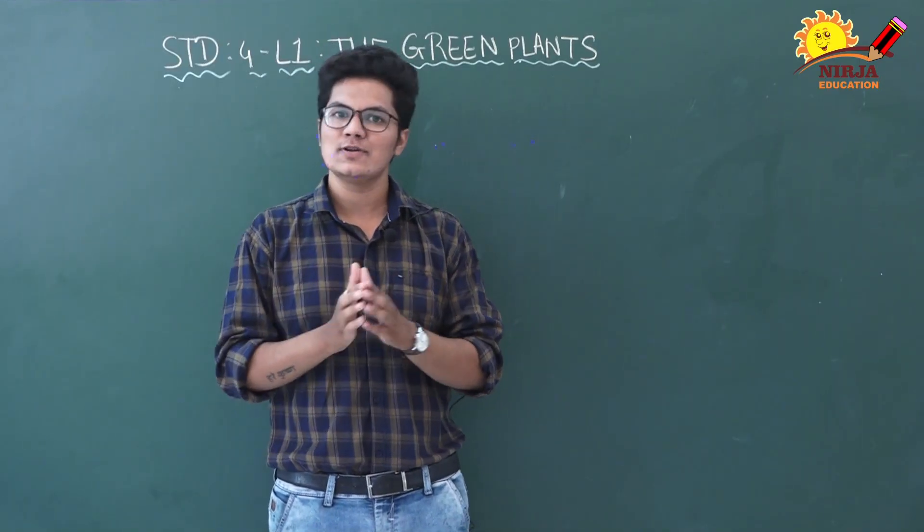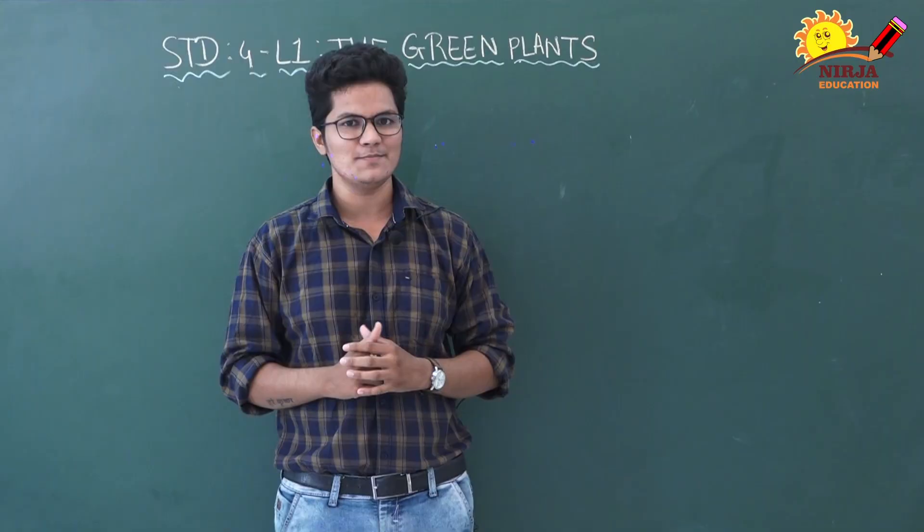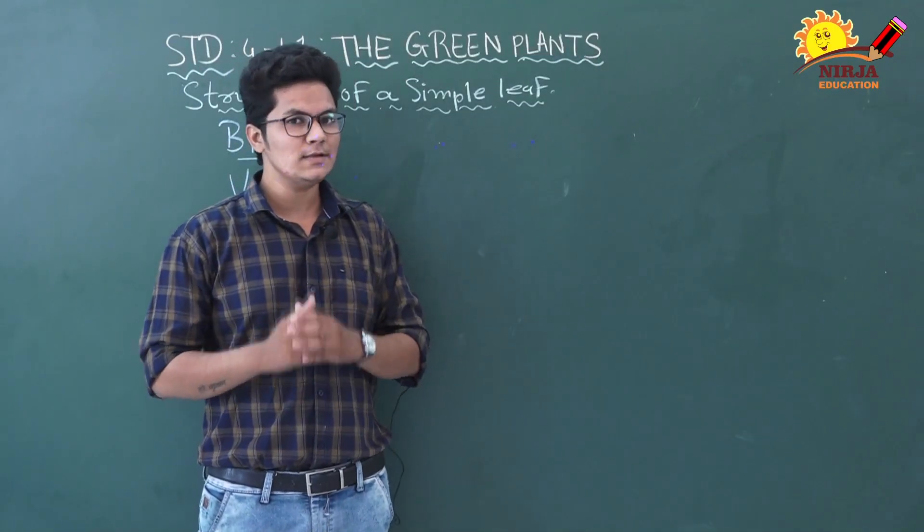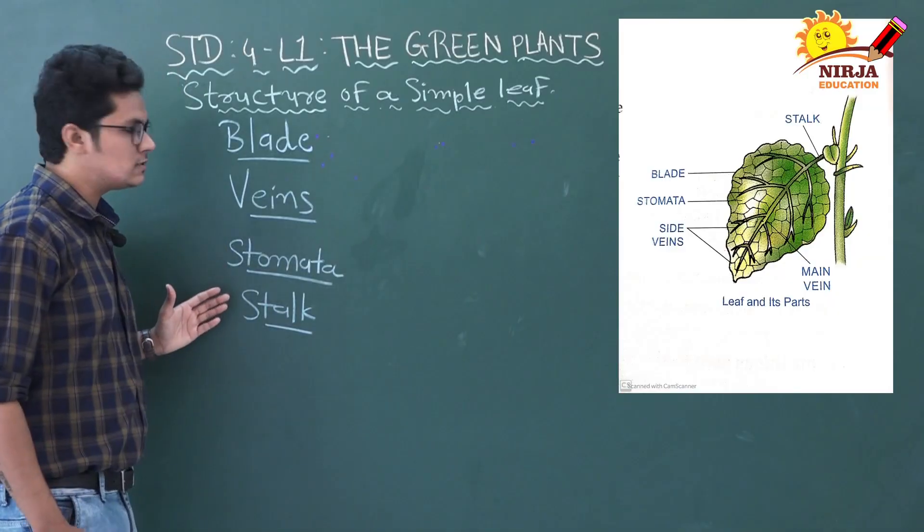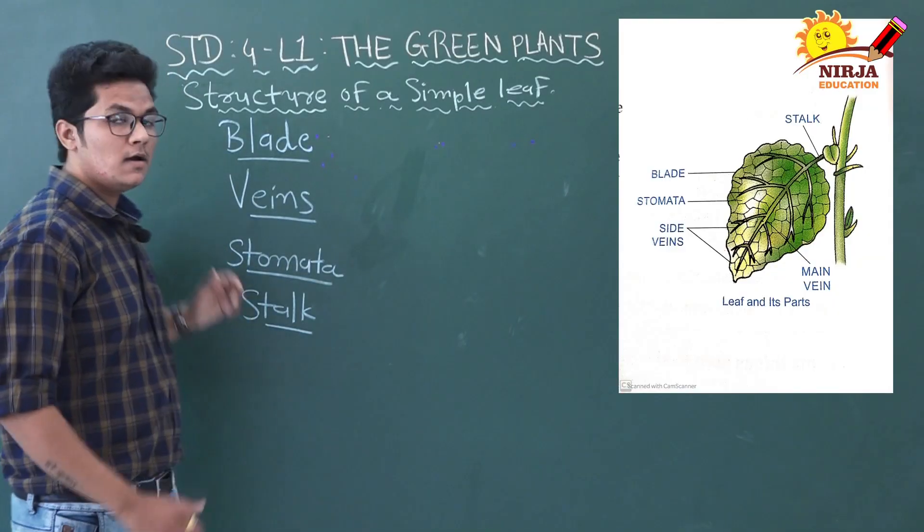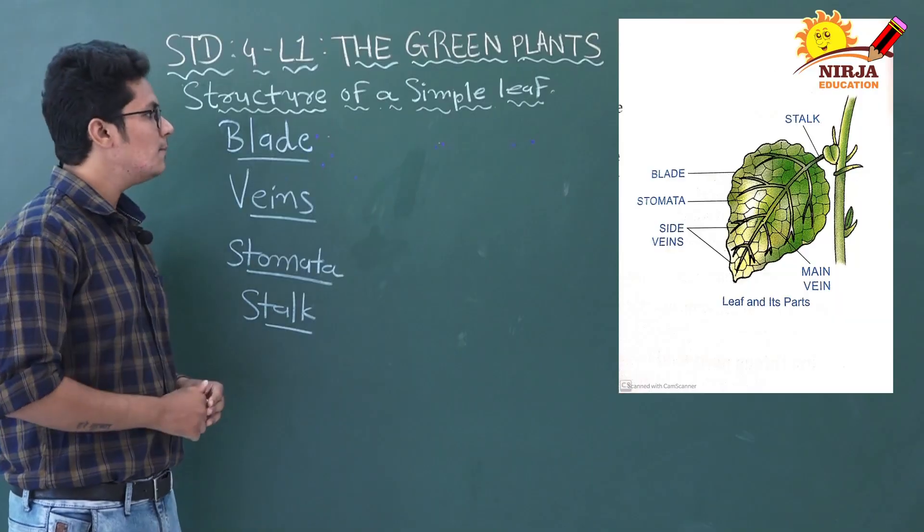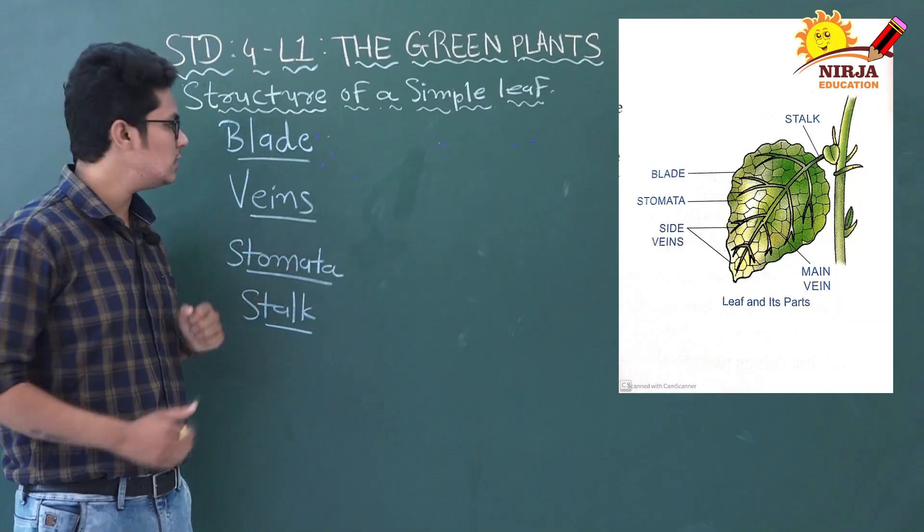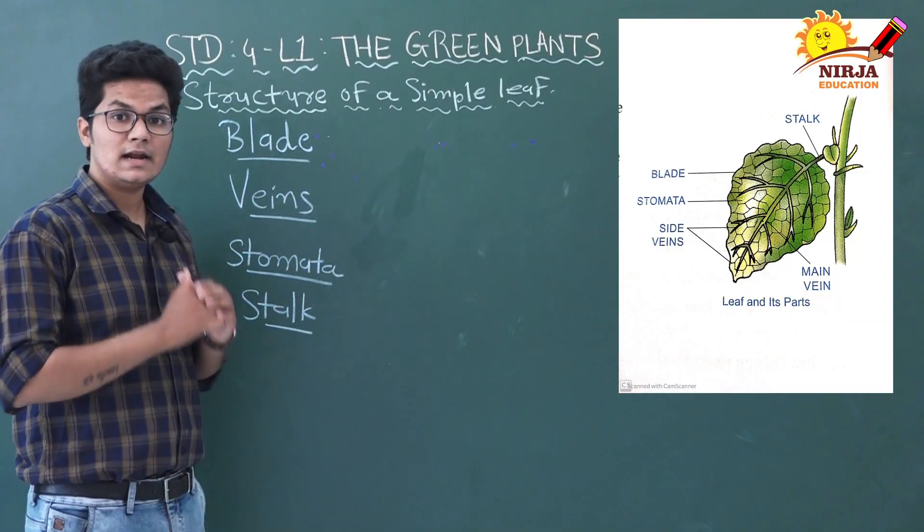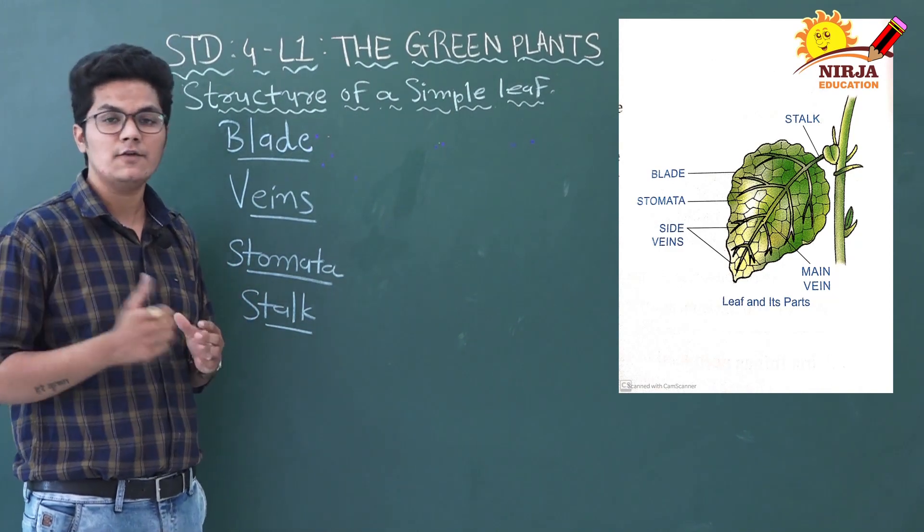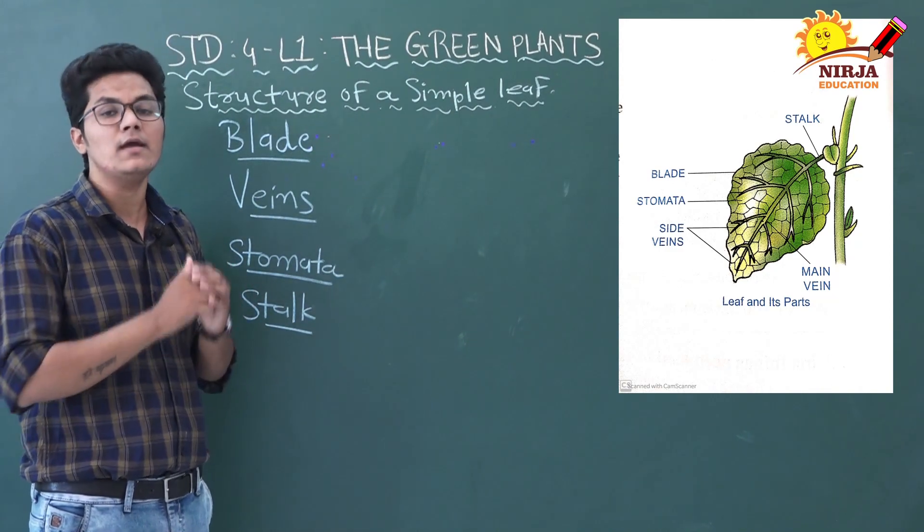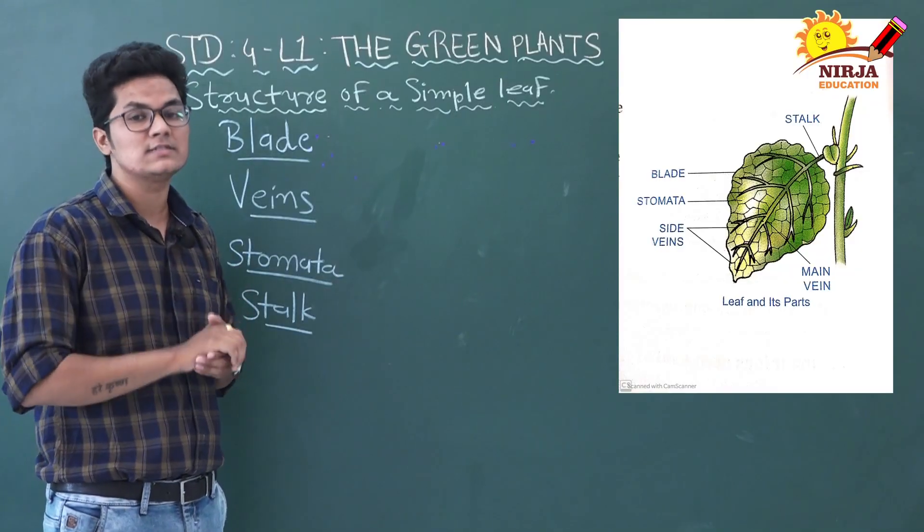So let's see the structure of a simple leaf. You can see the picture of a simple leaf. A simple leaf has these parts: first is the blade, the flat part of a leaf is called blade. There are veins - a number of veins in a leaf, main veins and side veins, just like our body. Our body has millions of veins that carry blood to different body parts.